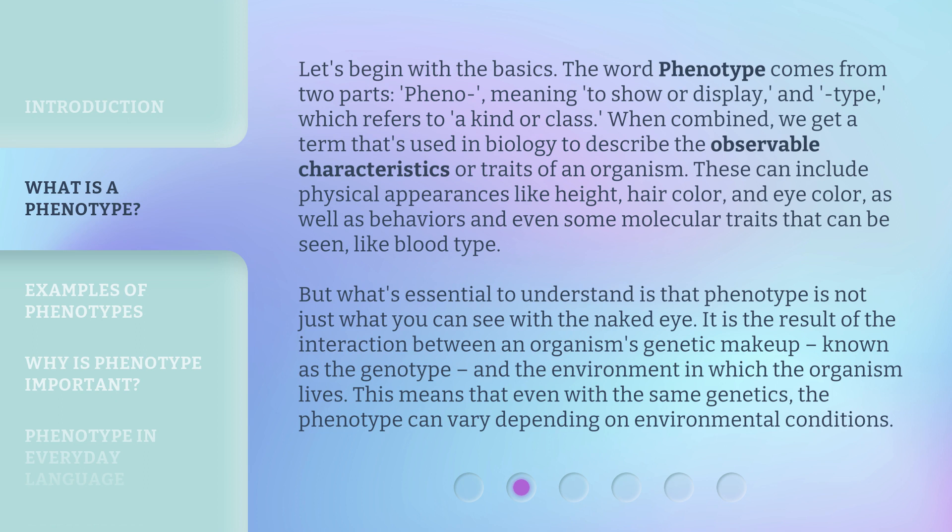These can include physical appearances like height, hair color, and eye color, as well as behaviors and even some molecular traits that can be seen, like blood type. But what's essential to understand is that phenotype is not just what you can see with the naked eye. It is the result of the interaction between an organism's genetic makeup, known as the genotype, and the environment in which the organism lives. This means that even with the same genetics, the phenotype can vary depending on environmental conditions.